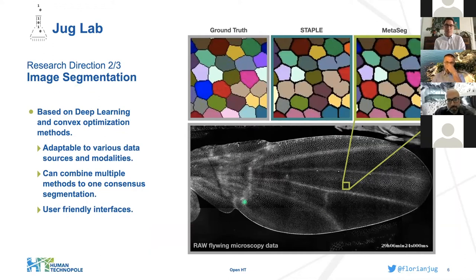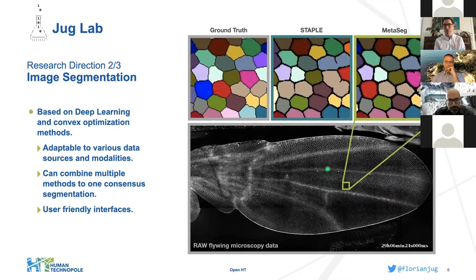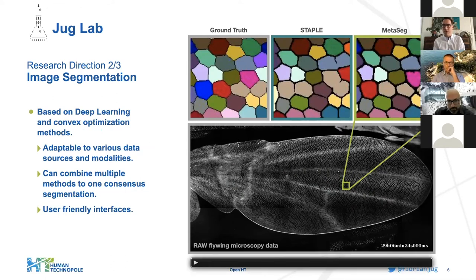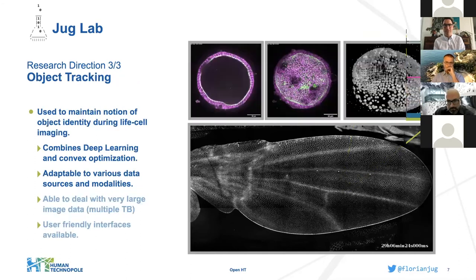A second example is image segmentation — here shown on the epithelium of a fly wing, but it can really be any microscopy data containing objects. Segmentation means getting an understanding of what objects are present in these images. Once we have a notion of objects, we can ask quantitative questions about their properties automatically, without humans having to do this manually. This is a very nice research direction because it combines deep learning methods with more conventional convex optimization methods, and we can show highly competitive results across many different datasets.